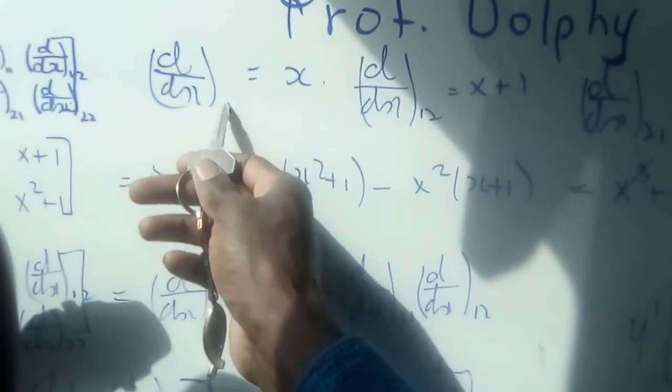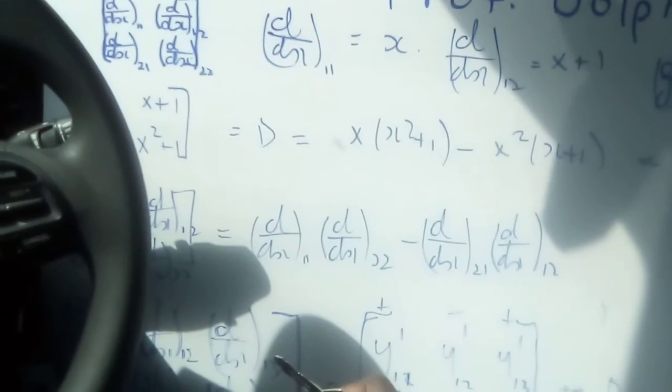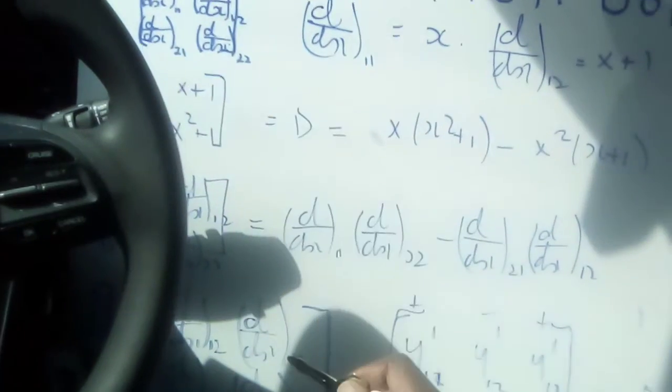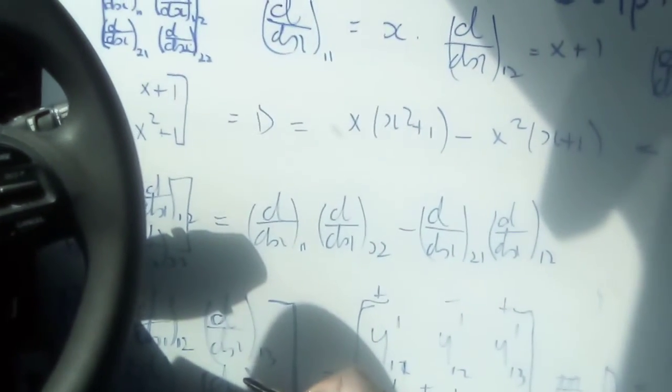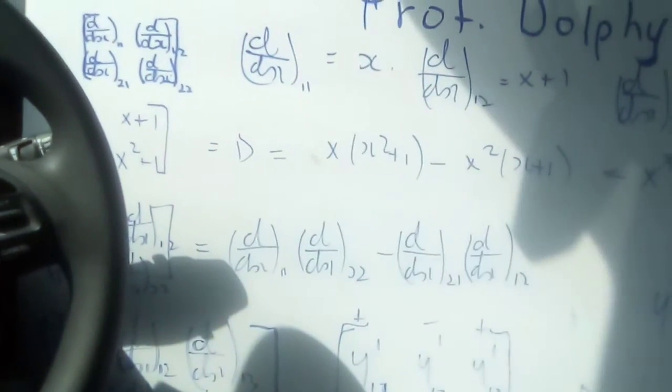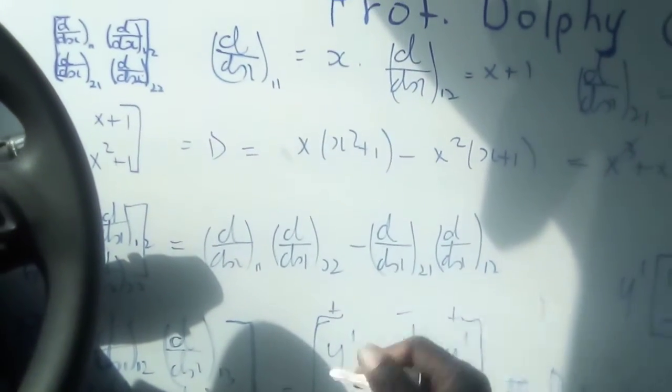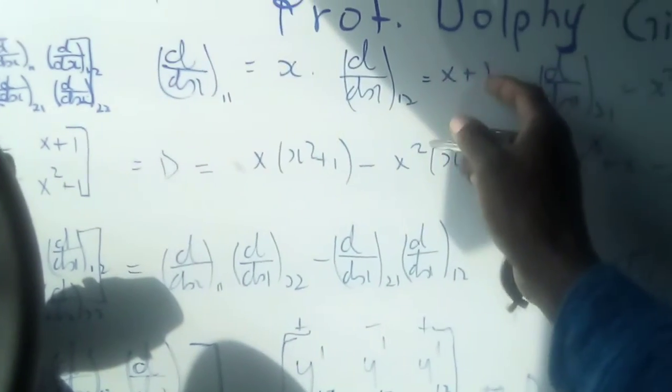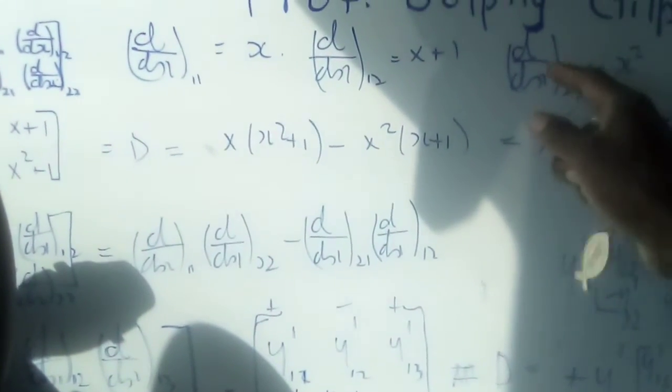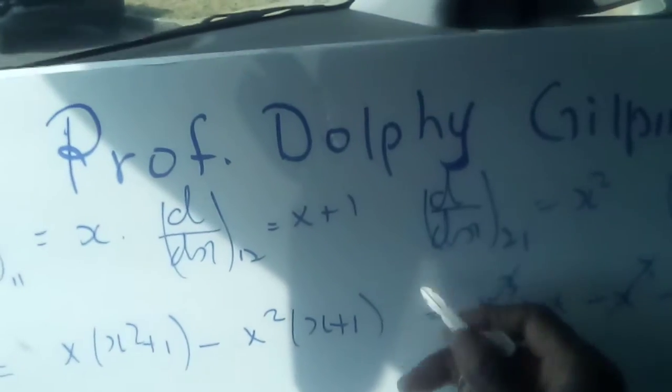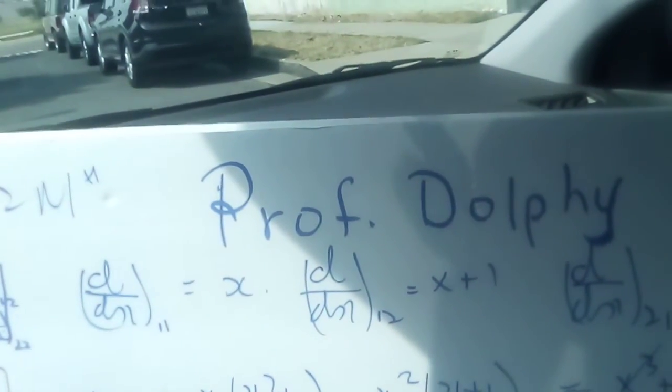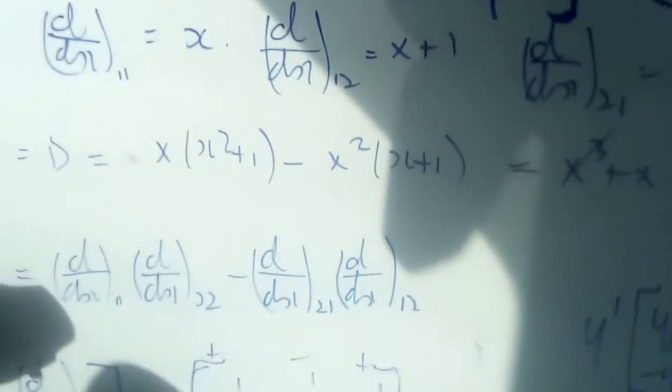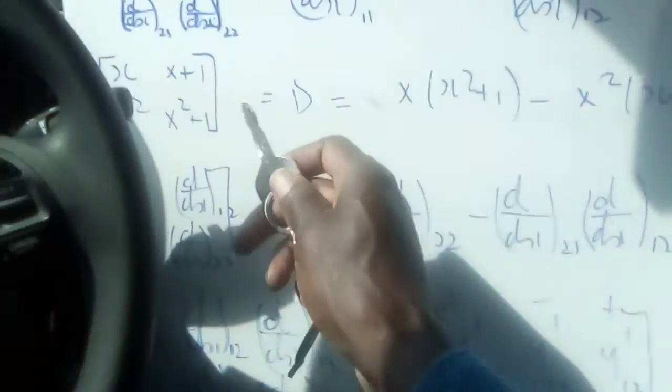So we say d by dx of r11, or whatever it is - it doesn't have to be resistance here - the one-one position in row one and column one is equal to x. We are assigning that d by dx of r12 is equal to x plus 1. These are assignments. And d by dx of r21 is x squared, and d by dx of r22 is x squared plus 1.